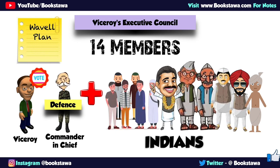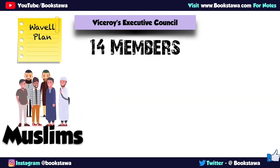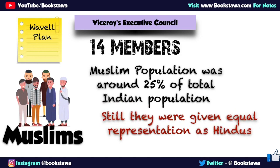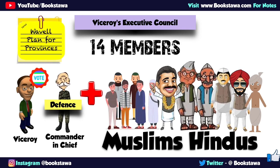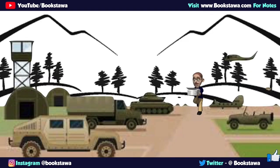The veto power meant the power to override the decision of the Executive Council. Although it was also said that the Viceroy would use this veto power very little. A big concession was given to the Muslim community — considering that the Muslim population in United India was only 25%, yet they were given seats equal to Hindus. It was also said in the Wavell Plan that if this plan was approved for the central government, then a similar plan would be introduced for the provinces as well.